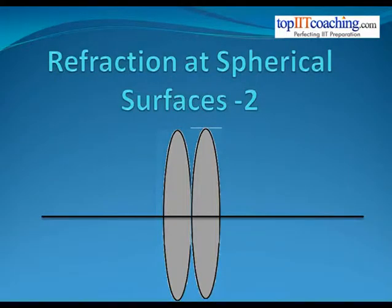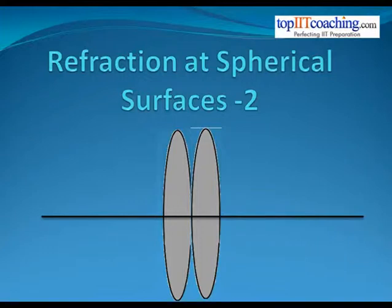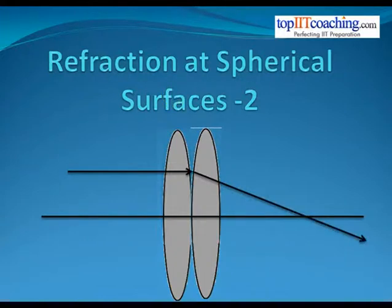Hi students. In the last chapter we studied what a lens was, how refraction through a lens takes place, and how images are formed when light is refracted through a lens. In this chapter, we are going to extend that discussion. We are going to see what happens when two lenses are placed together, where the focus of the combined lens is, the combined angle of deviation of two lenses, and what happens when two lenses are placed at a distance d from each other. So let's begin.